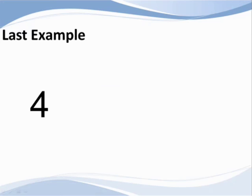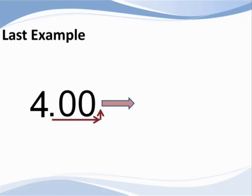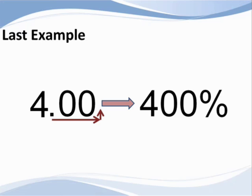Last example I promise. Suppose you want to change four to a percent. Remember the hidden decimal point? If you don't see it, it's always at the end of a number. Move it two places to the right and fill in the blanks with zeros. Four is the same as 400 percent.